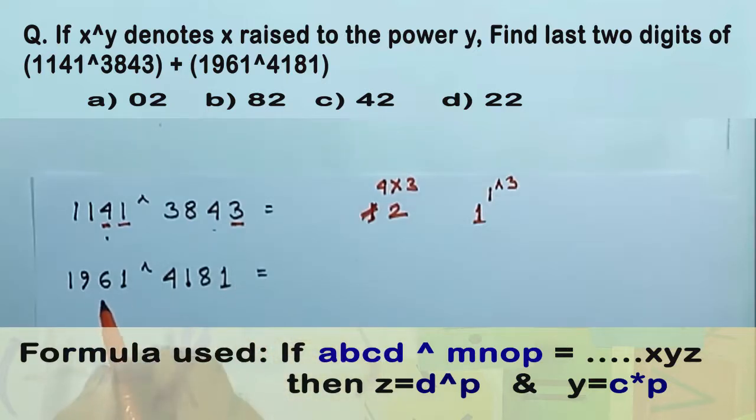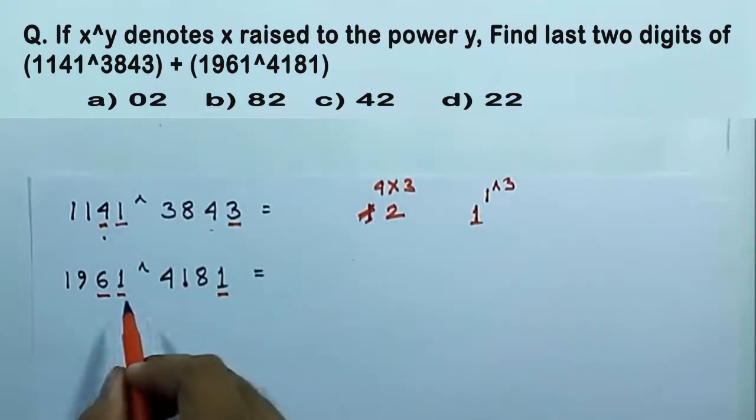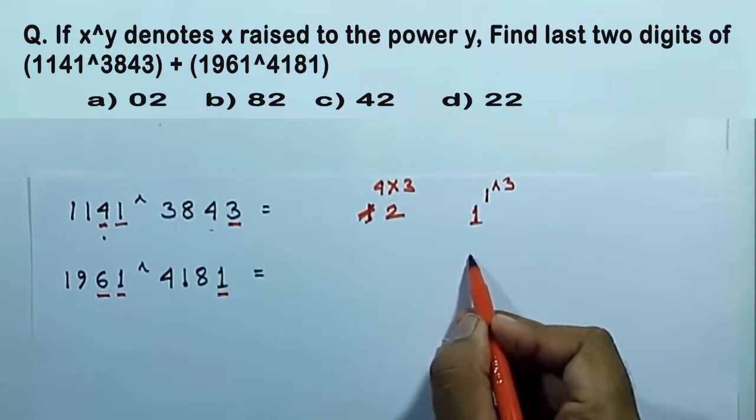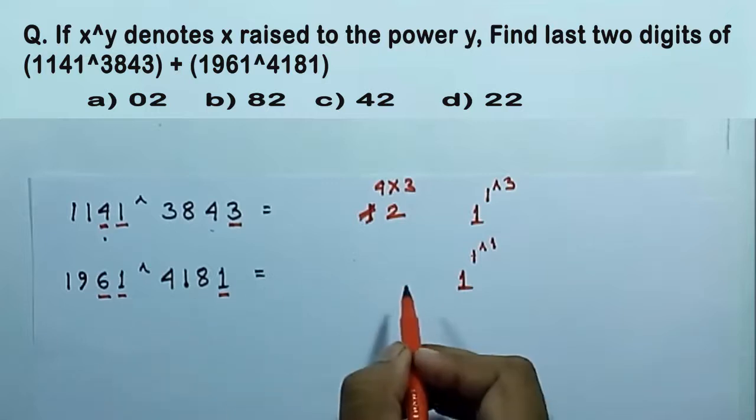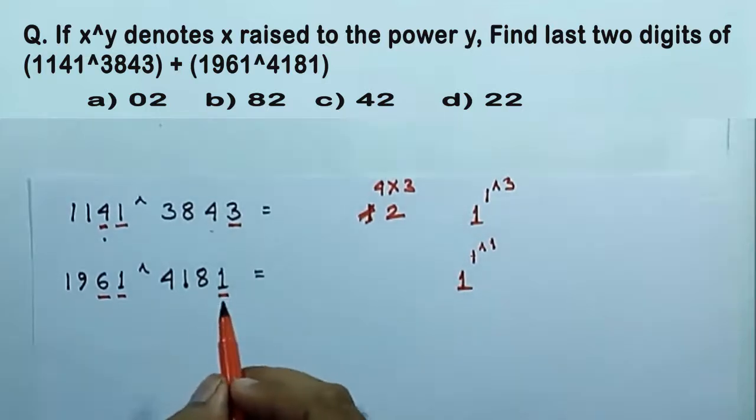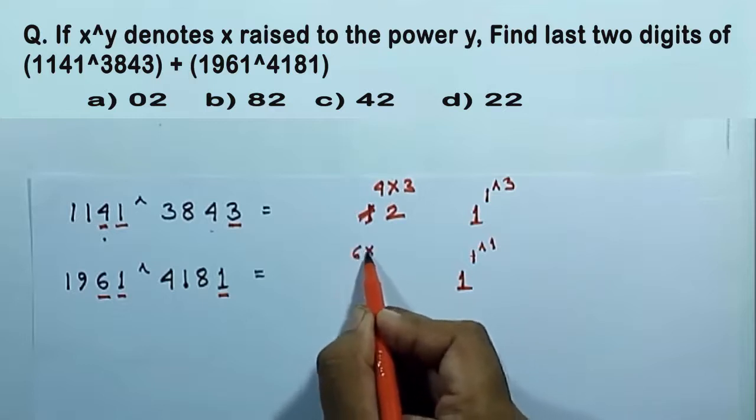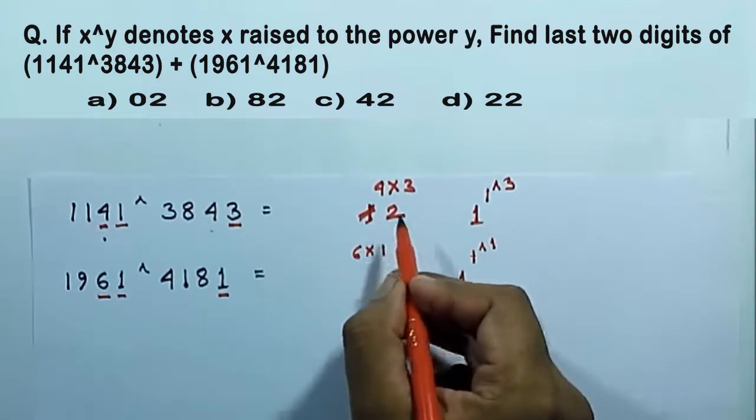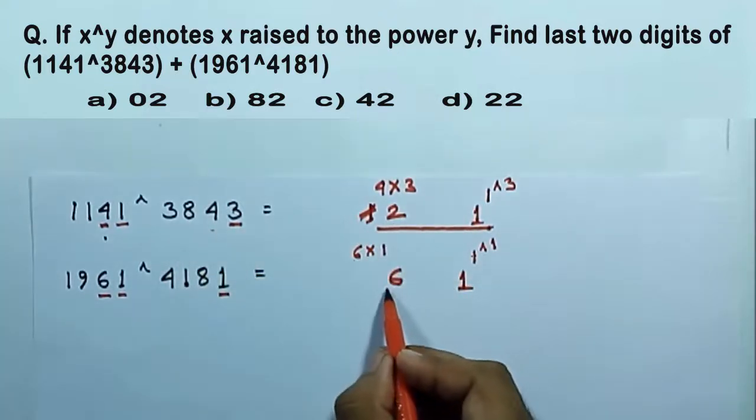To find the last two digits of this number, these digits are important. So again, I am following the same step. To find the unit digit, we have to calculate 1 to the power 1, which is 1 of course. And to find the second last digit of this number, we have to multiply 6 into 1, which is 6.